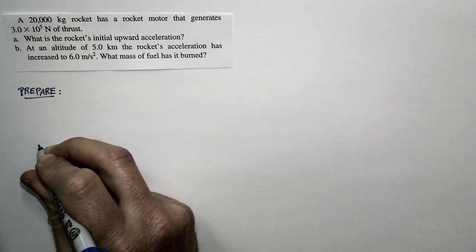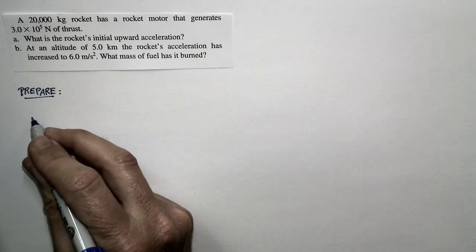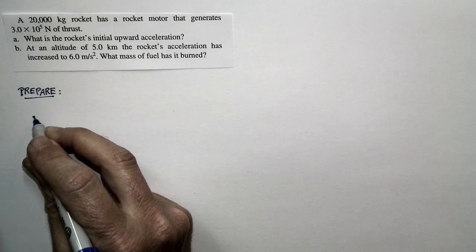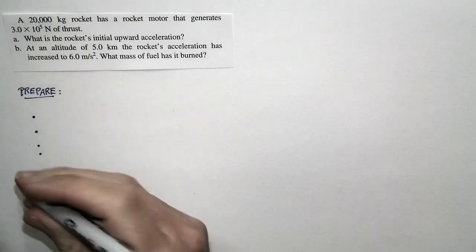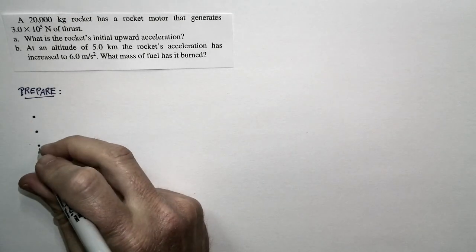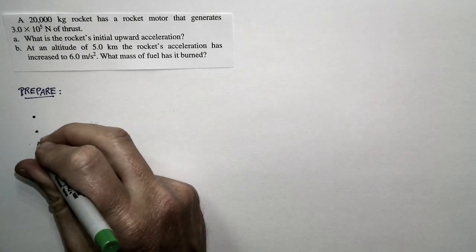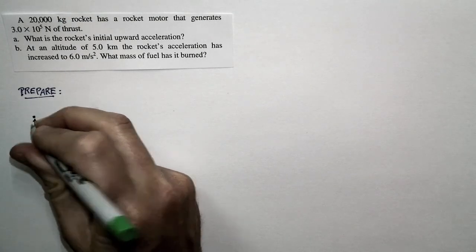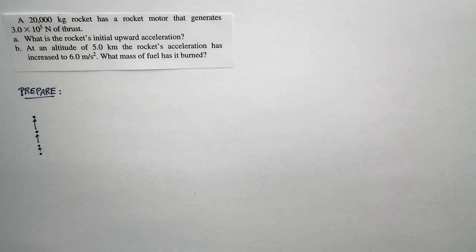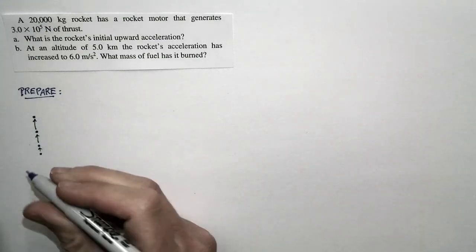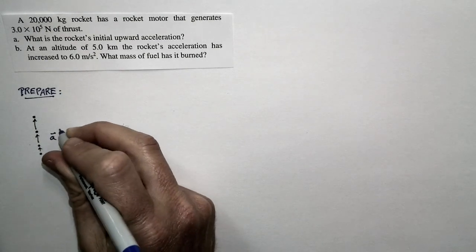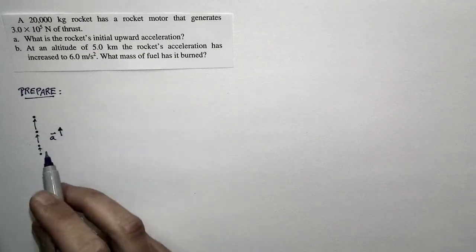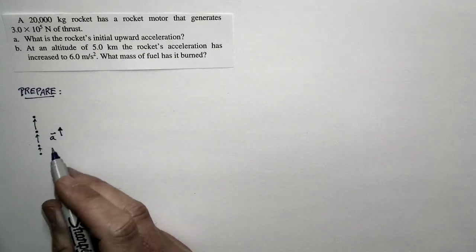The basic motion diagram is going to look like this. The rocket is starting out on the ground and then moving upward. As it moves upward, its velocity is steadily increasing — the velocity vectors are getting longer and longer. There's an acceleration directed vertically upward. We know that's true: there's an upward acceleration for the rocket.